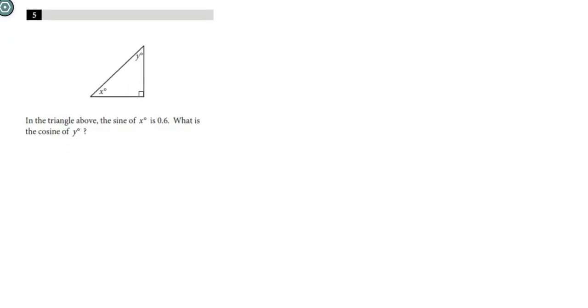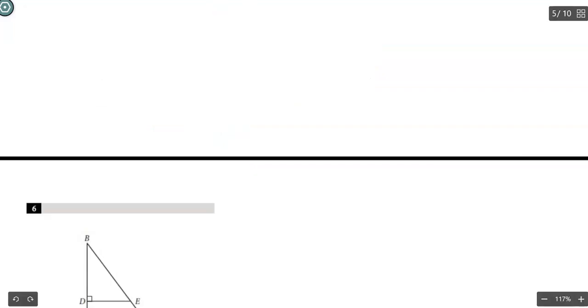Number 5. Triangle above, the sine of X is 0.6. What is the cosine of Y? Again, sine of X, cosine of Y. We know that when you have the sine of one angle and the cosine of the other angle, they're going to be equal to each other. So if the sine of X is 0.6, the cosine of Y is also going to be 0.6. So again, we're looking at complements here. It could be any fraction that comes out to that, like 3/5.